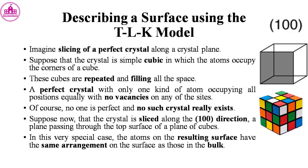Of course, no such perfect crystal really exists. Suppose now that the crystal is sliced along a plane passing through the top surface of a plane of cubes. In this very special case, the atoms on the resulting surface have the same arrangement on the surface as those in the bulk.